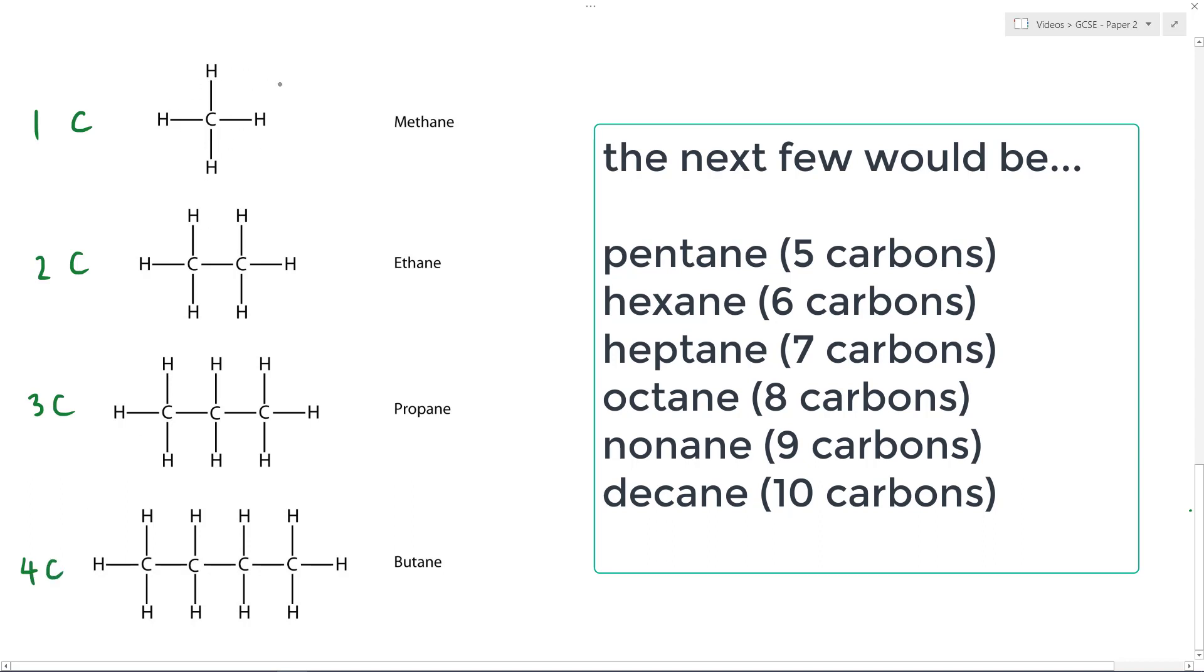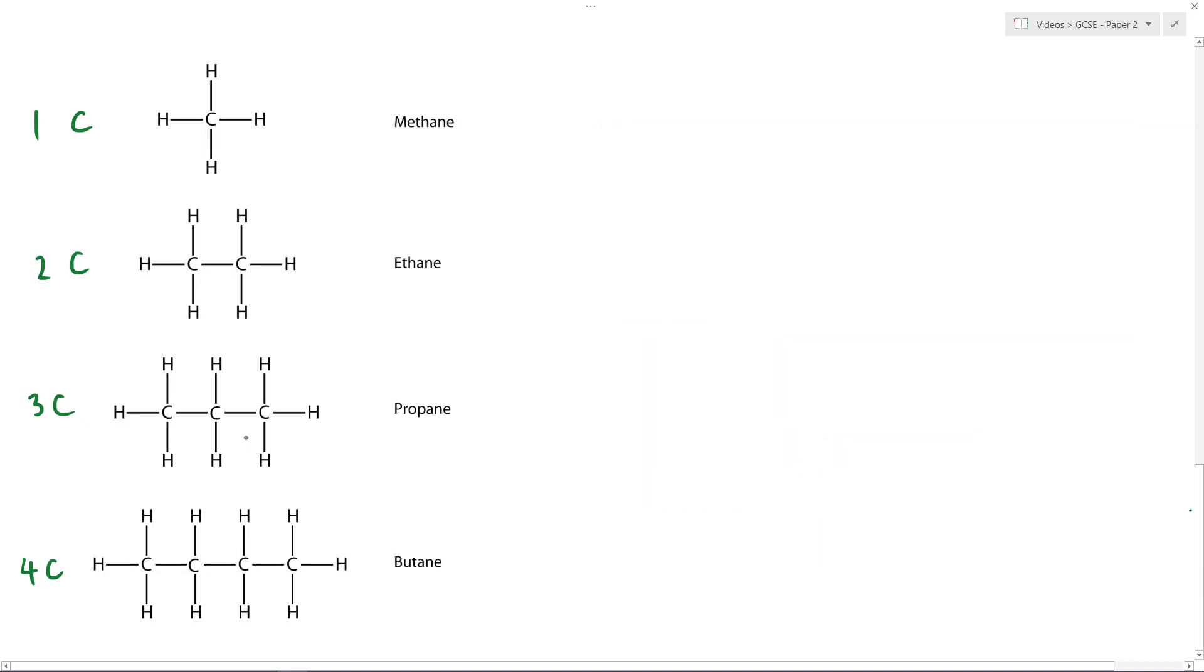Each time the number of hydrogens increases, but it does so by that rule of CnH2n plus 2. So 1 times 2 add 2 is 4. 2 times 2 add 2 is 6. 3 times 2 add 2 is 8. 4 is 10. So you can see they follow that general formula perfectly. And if I was given one of these, or if you were given one of these molecules, you could work out that it's an alkane, just like that family resemblance, big nose, tall, whatever. You could work out it's an alkane because of that general formula.